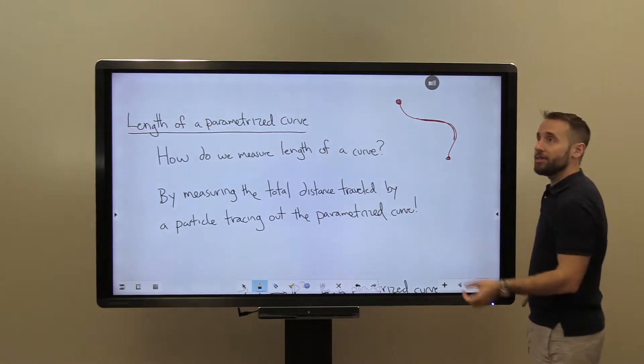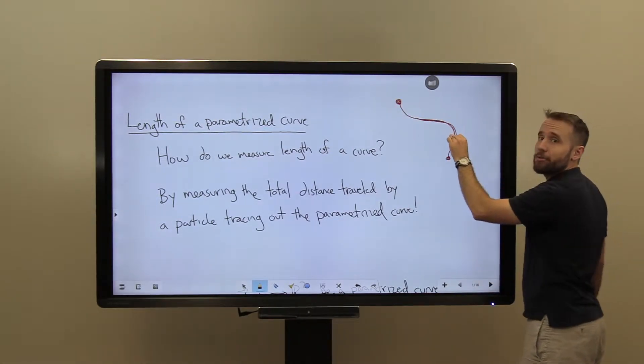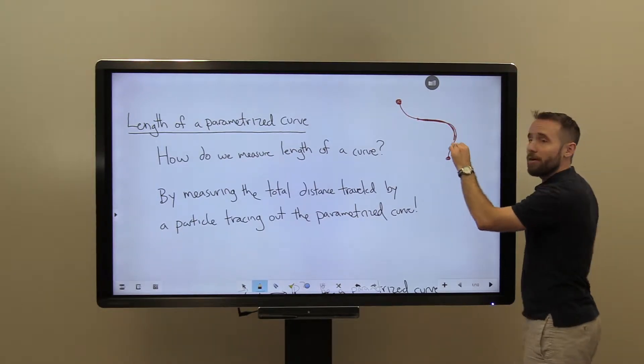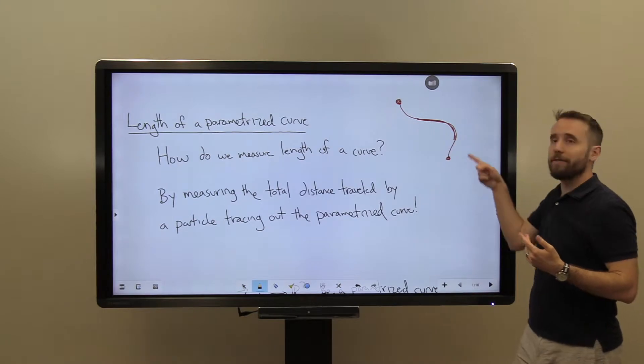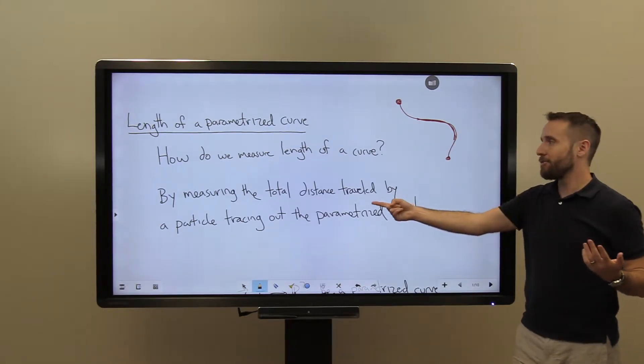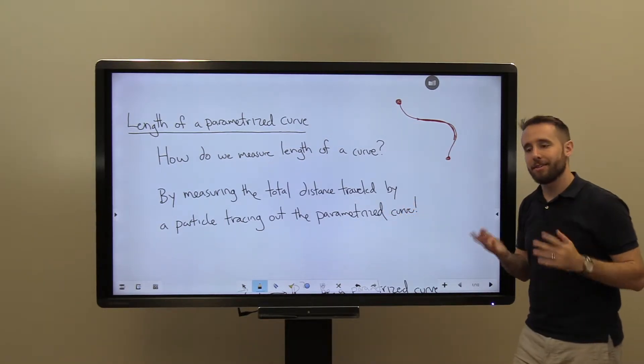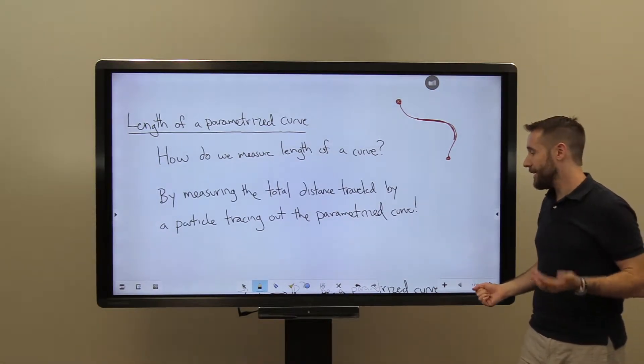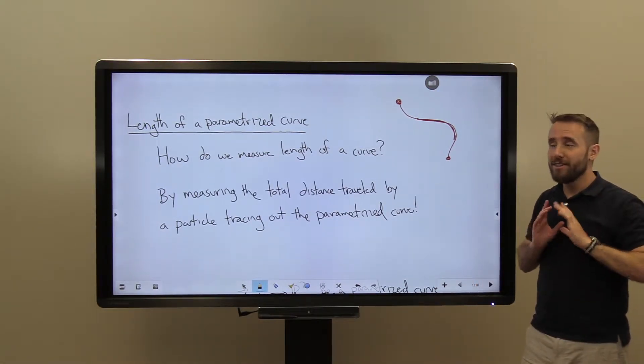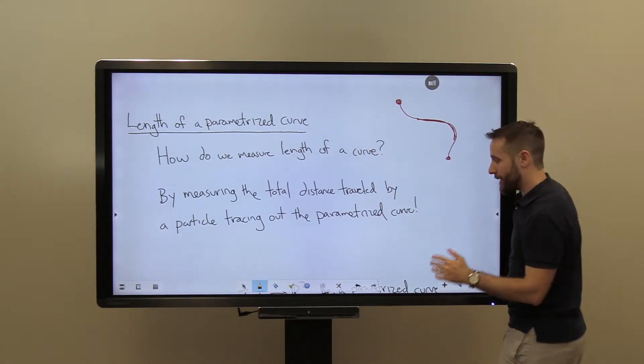But if my parameterization were to have my particle retracing its steps, well, that would be problematic, and I couldn't measure the total length of this locus by measuring the total distance traveled. Sort of like retracing our steps would add on extra distance traveled. So as long as we assume that nothing weird like that is happening, this leap is okay.